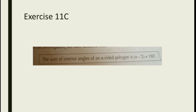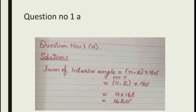Level 6, open your book to page number 288, Exercise 11C, question number one. Question number one is: find the sum of interior angles of each of the following polygons.